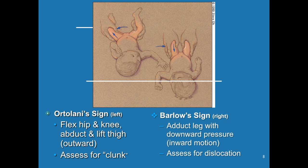We have two exams. The Ortolani is on the left side and the Barlow is on the right. For the Ortolani, we flex the hips and knees, abduct them, and lift the thighs outward, using the last three fingers of both hands to feel for a clunk, which would indicate movement out of the socket. For the Barlow, we adduct the legs and apply downward pressure at the same time — this assesses for complete dislocation. Again, use those last three fingers to feel over the joint.